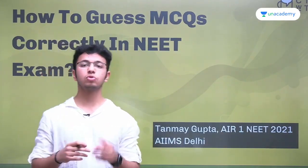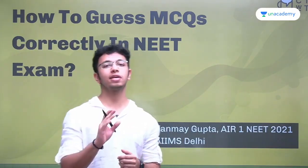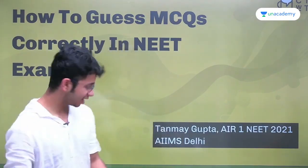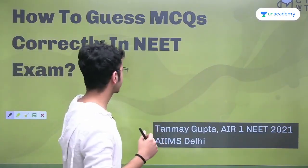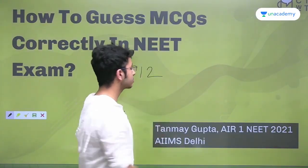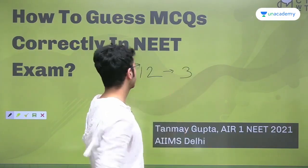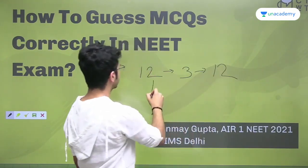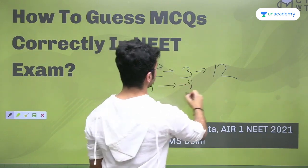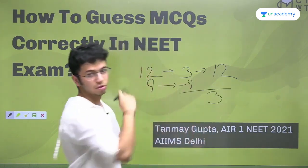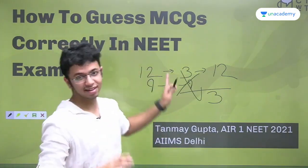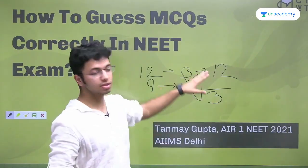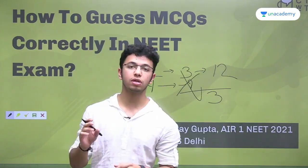A very important question that comes to the mind of every NEET aspirant is: should we take a random guess? From my side, no, you shouldn't. Every time I took a random guess, I used to get it wrong. One friend explained the math: if you have 12 questions you don't know, probability says you'll get 3 correct, earning 12 marks, but the 9 incorrect ones give minus 9, leaving you with a net of 3. But this math never works in practice. Personally, I would end up with minus 12, and I am sure random guessing is not the right thing to do in NEET.